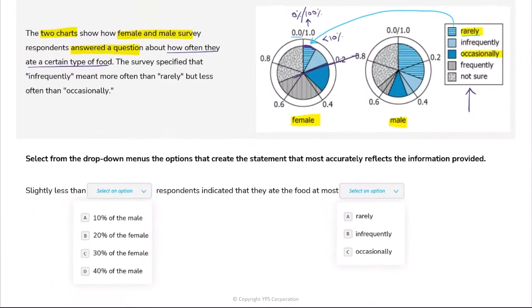Now let's read the question further. It says the survey specified that infrequently meant more often than rarely but less often than occasionally. Which means if you're talking about infrequent, which is one of the categories here, it is more often than rarely. That means rare is when you eat it maybe once, infrequent would then be twice - I'm not giving actual numbers - but it is less often than occasionally.